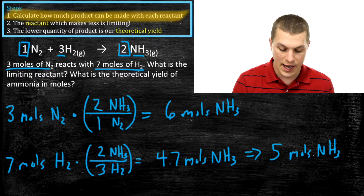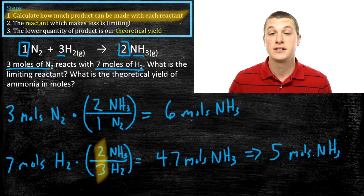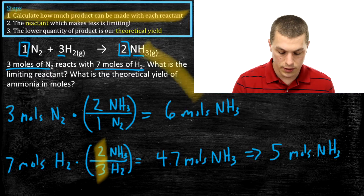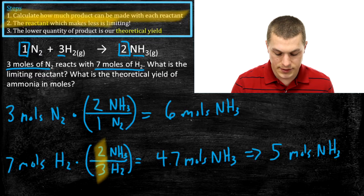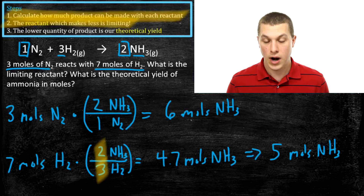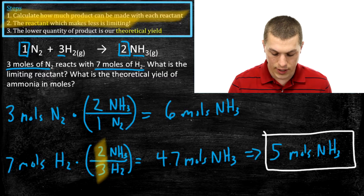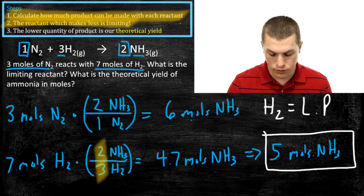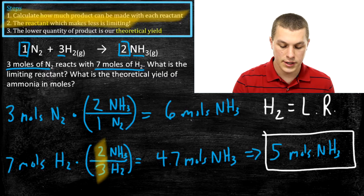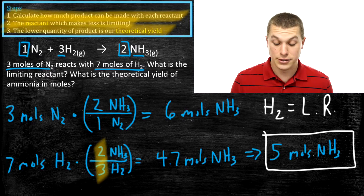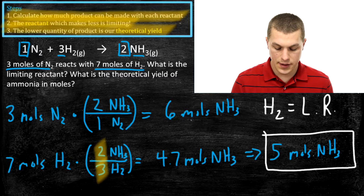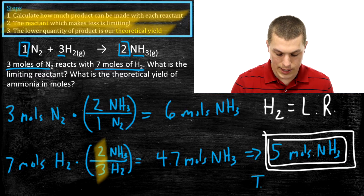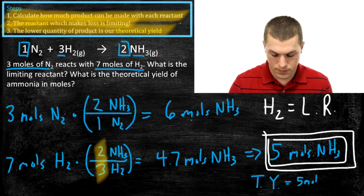Our conversion factors — this two and this three — have unlimited sig figs because they're just ratios from our chemical reaction. So what's our limiting reactant and theoretical yield? That's where steps two and three come in. Step two says the reactant which makes less is limiting. Hydrogen gives us a lower quantity of ammonia, so hydrogen is our limiting reactant — that's what runs out first. The theoretical yield is the lower quantity of product, which is our five moles of NH3. So TY equals five moles NH3.